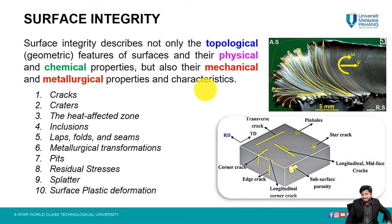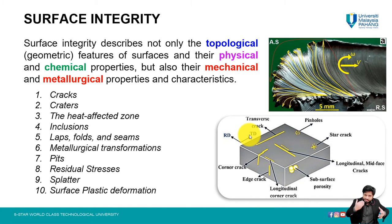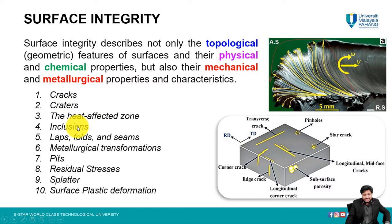For example, if you have a smartphone, over time you can find scratches or dents — these are surface features that are prominent. Defect-based features include cracks, craters, heat affected zones, inclusions, laps, folds, seams, metallurgical transformations, pits, and residual stresses — all of which can happen due to manufacturing processes or during service lifetime.